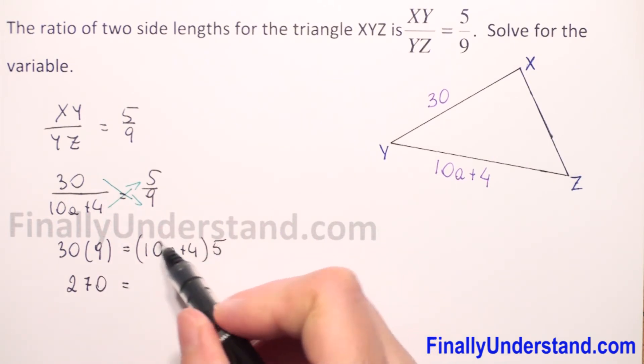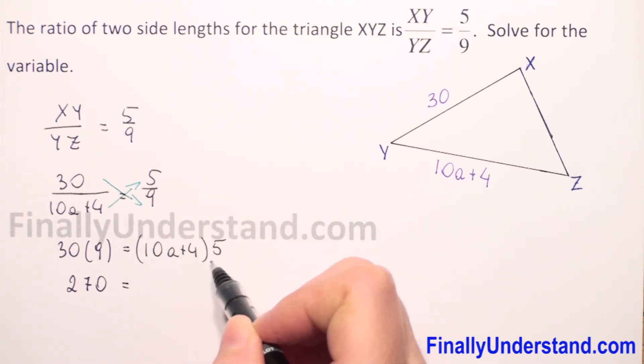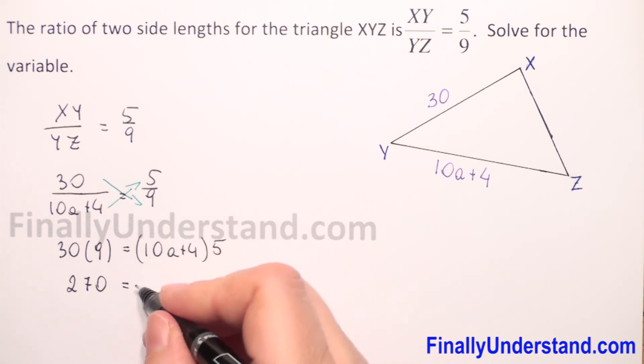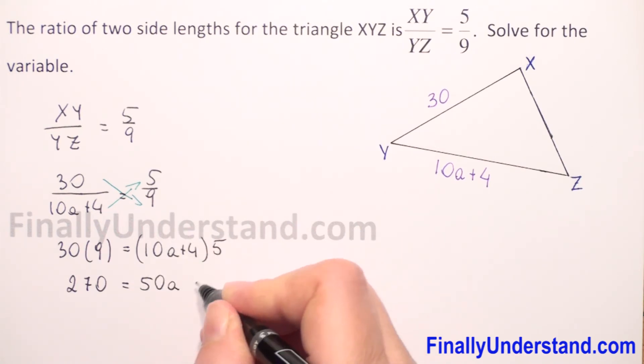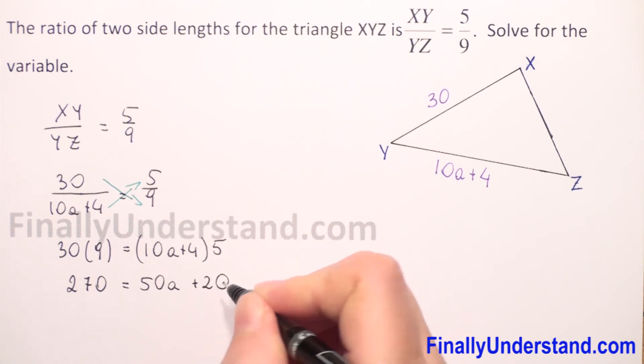now we have to multiply every expression in parenthesis by 5. So 10a times 5 is 50a. 4 times 5, so this is 20.